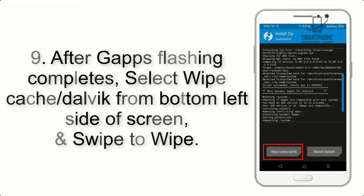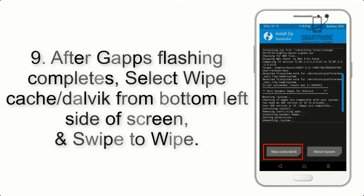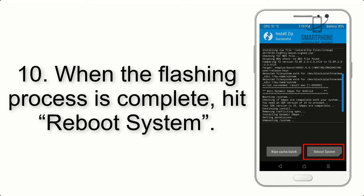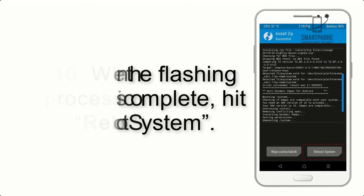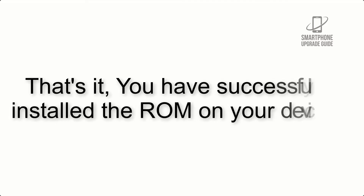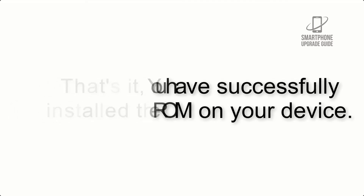Step 8: Flash the GApps zip package in the same manner. Step 9: After GApps flashing completes, select Wipe Cache and Dalvik from the bottom left side of the screen and swipe to wipe. Step 10: When the flashing process is complete, hit Reboot System. You have successfully installed the ROM on your device.